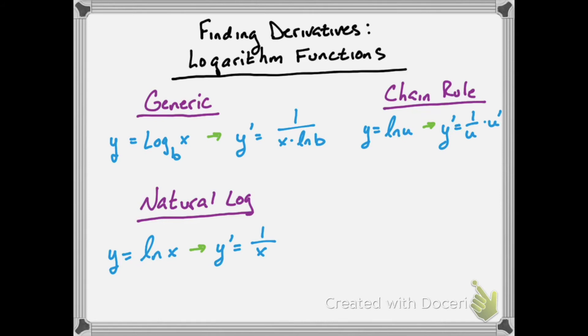Here's an example, y equals log base 3 of tangent of x. We have an outside function, the logarithm, and an inside function, the tangent function, so this is a chain rule, and the derivative of the logarithm will be 1 over the inside function, which would be tangent of x, times the natural log of the base 3.